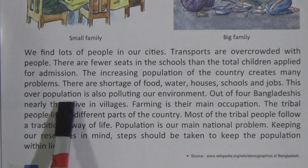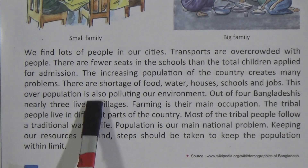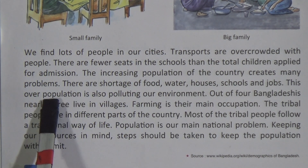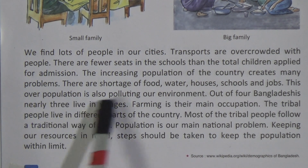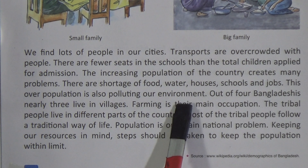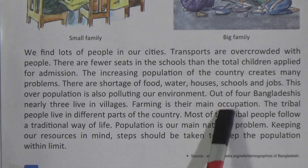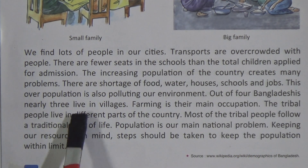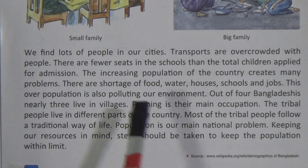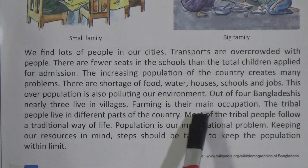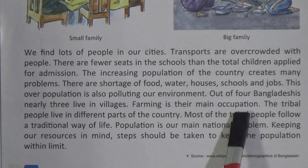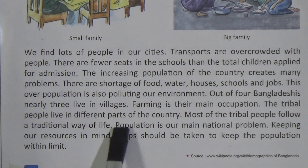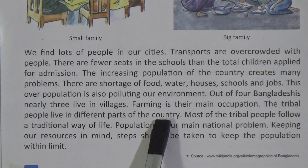This overpopulation is also polluting our environment — too many people pollute the environment as well. Out of four Bangladeshis, nearly three live in villages and farming is their main occupation. The tribal people live in different parts of the country.